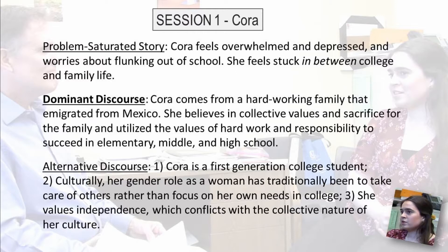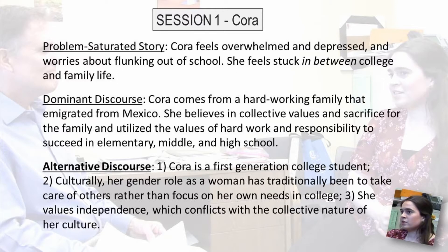She utilized the values of hard work and responsibility to succeed in elementary, middle, and high school. Cora's alternative discourse is composed of three important factors that do not conform to the dominant plot. She is a first-generation college student, the first in her family to attend college. Culturally, her gender role as a woman has traditionally been to take care of others rather than focus on her own needs in college. And finally, she values independence, which conflicts with the collective nature of her culture.